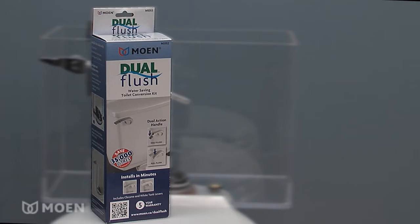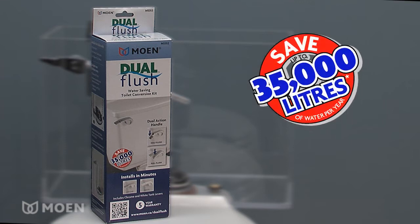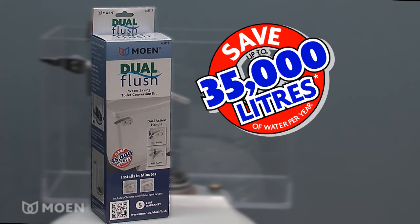Welcome to the instructional video for the installation of Moen's Dual Flush Toilet Conversion Kit, allowing you to quickly and easily convert a 13-liter toilet to a Dual Flush Water Saving Toilet. The Dual Flush Toilet Conversion Kit will allow you to save water up to 35,000 liters per year based on an average use for a family of four.